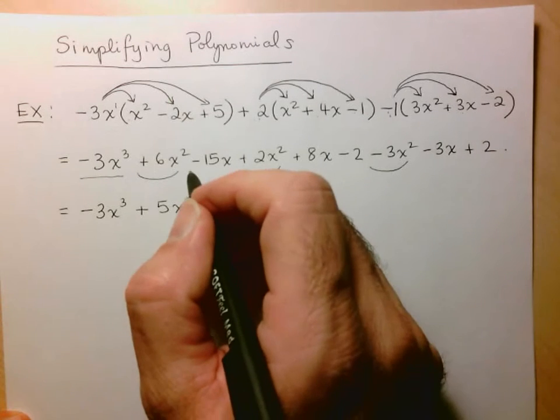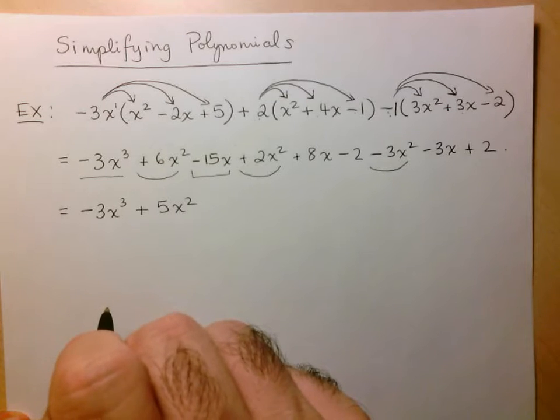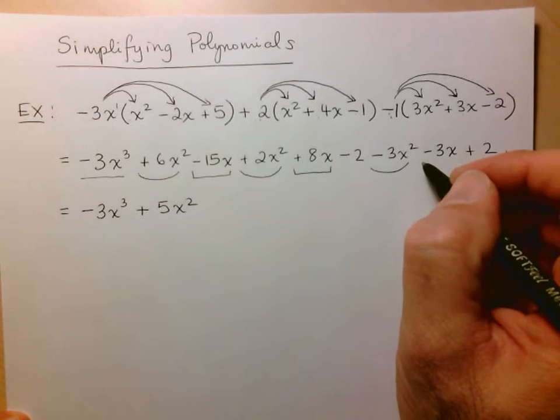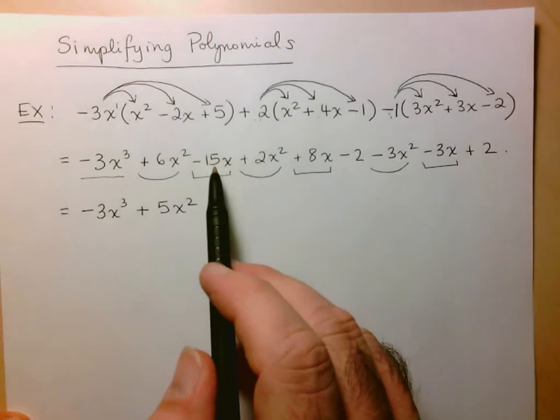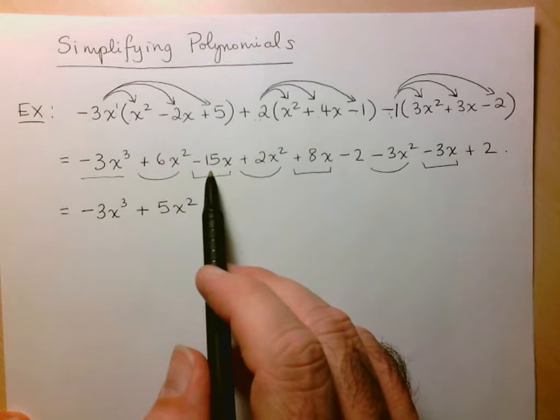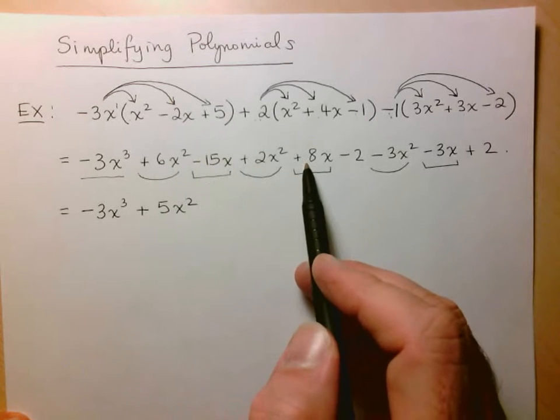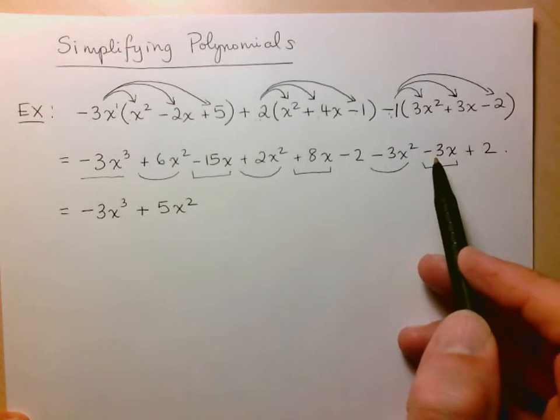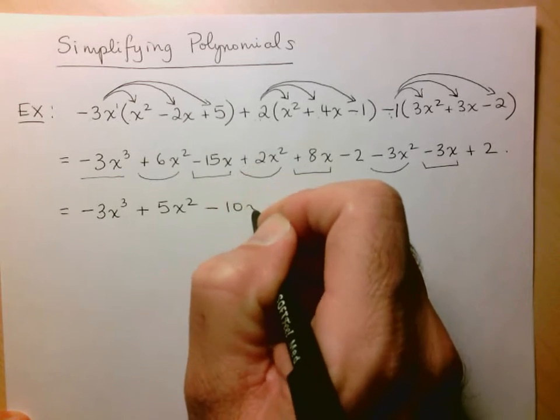Now I go to the next one and I see I have a minus 15x. So we look for the other terms that just have x's. So here we have a plus 8x and here we have a minus 3x. So let's add and subtract from left to right. I've got negative 15 plus 8. That gives me negative 7. And then negative 7 minus 3 gives me negative 10.